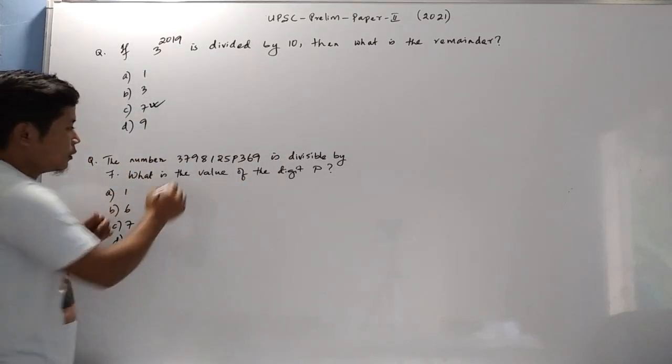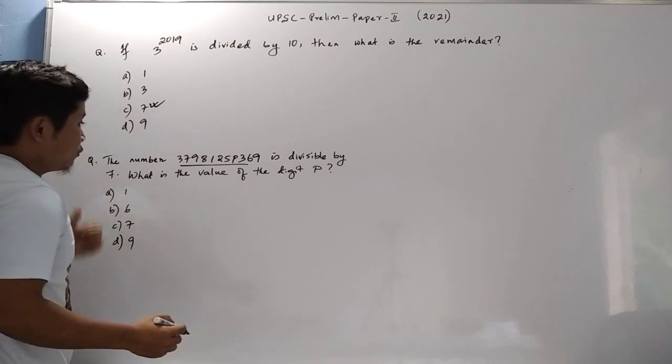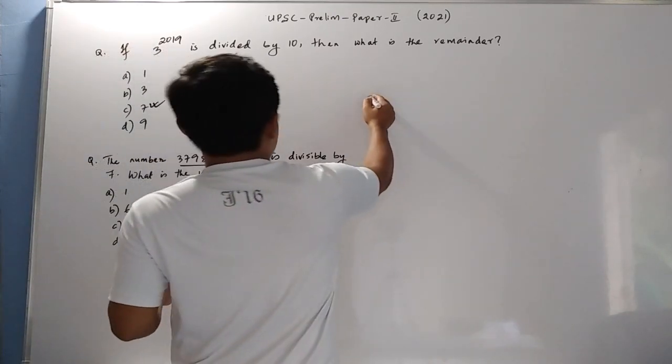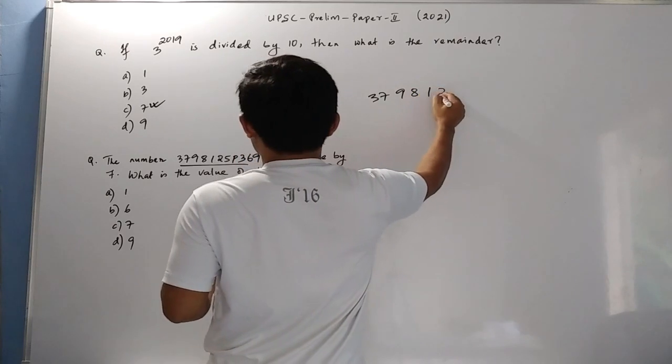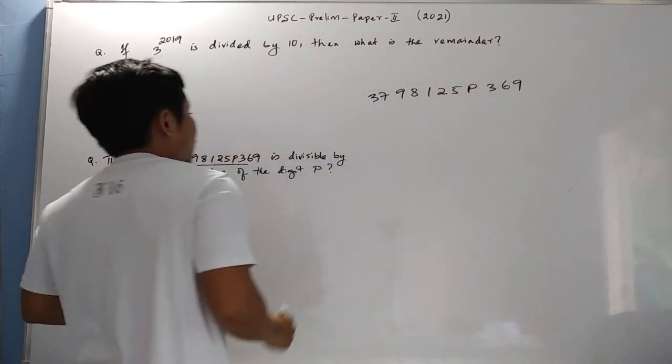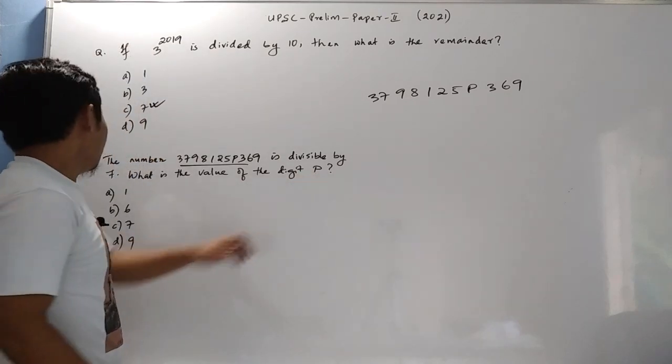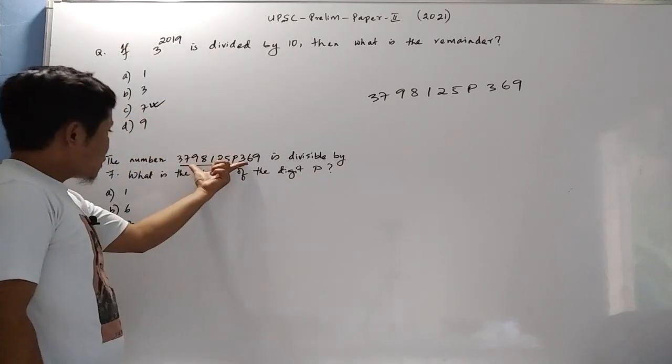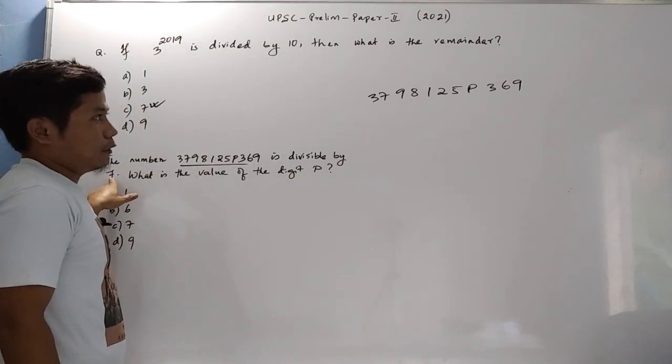And this is the next question, which is a big number: 3798125P369. What will be the value of P when this number is divisible by 7?